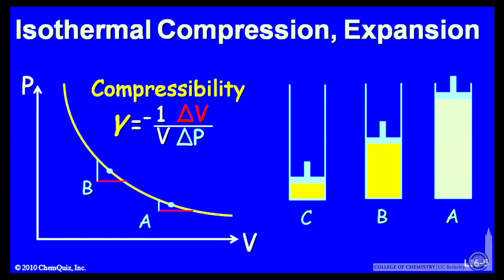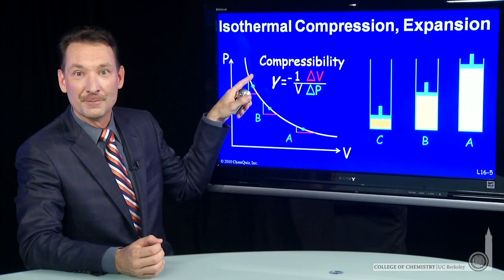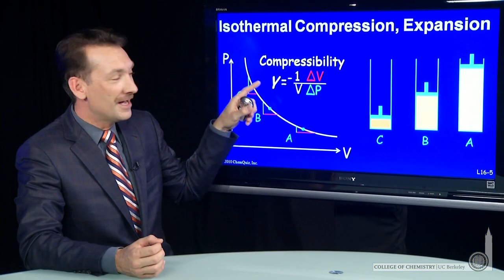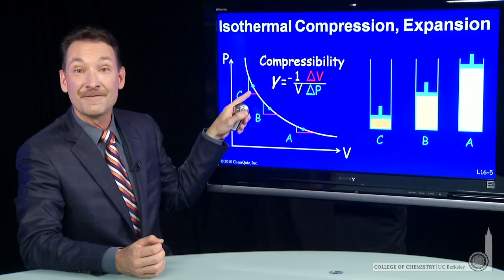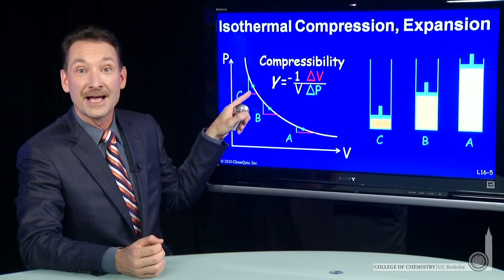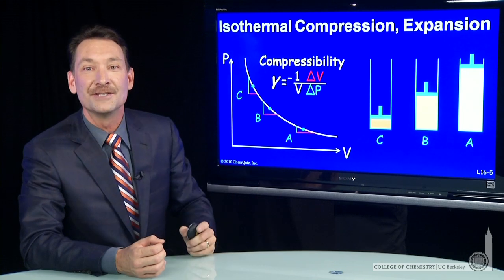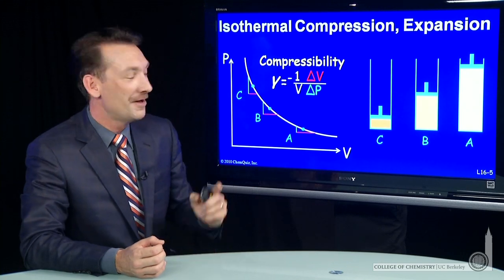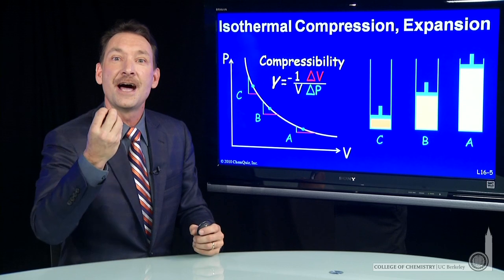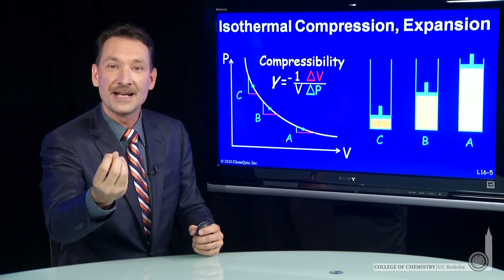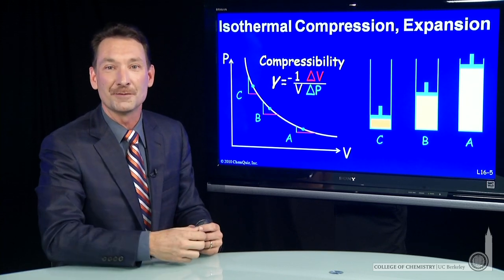As I go to even smaller volume, look what happens here. To get a change in volume, I need a large increase in pressure — a large increase in pressure for a small change in volume. This is not very compressible gas; this compressibility factor is very small for low volumes. So compressibility tells us how much we can change the volume for a given change in pressure.